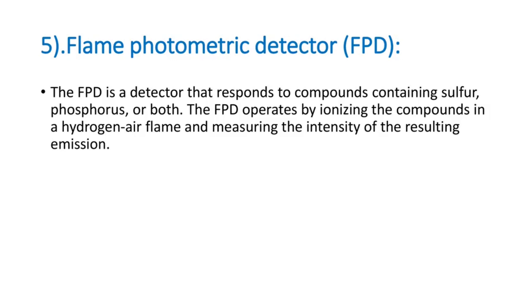Fifth, flame photometric detector, FPD. The FPD is a detector that responds to compounds containing sulfur, phosphorus, or both. The FPD operates by ionizing the compounds in the sample and measuring the resulting signal.